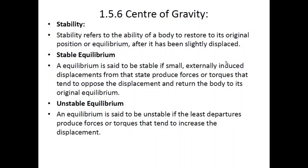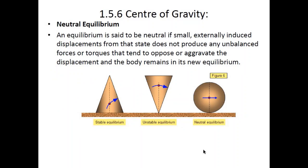Unstable equilibrium: when you give a push to something and the object topples over or falls onto its side. Neutral equilibrium: when you apply some external force or push, it does not produce any unbalanced moment at all, and the body remains in its new position. For example, a stable triangle would return to position if tilted; an unstable triangle would fall over if slightly pushed; a sphere in neutral equilibrium would simply roll over with no moment produced.